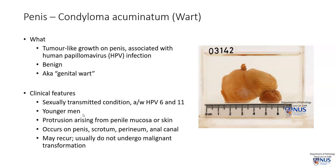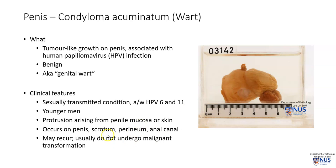It occurs in younger men, and what is seen is a protrusion or warty growth that arises from the mucosa or the skin. It occurs on the penis, as seen in this case, but can also occur in the scrotum, perineum, as well as the anal canal.